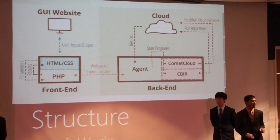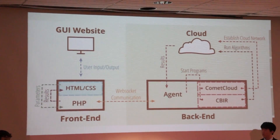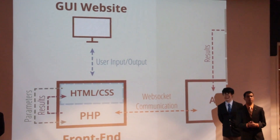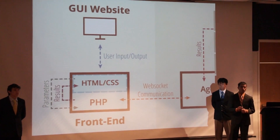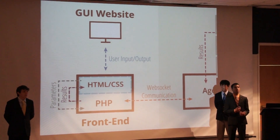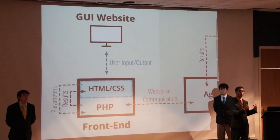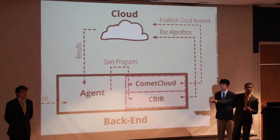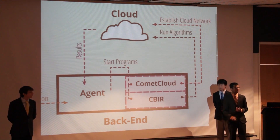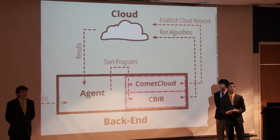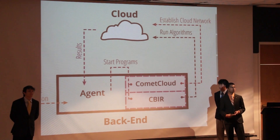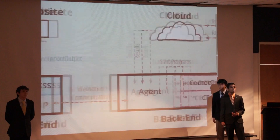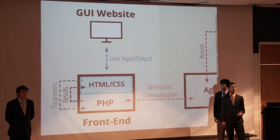Our program is conceptually split into two distinct structures: the front-end and the back-end. The front-end is responsible for handling all of the user interactions, primarily through the website. The back-end is responsible for managing all of the program features. On the front-end, the user first logs onto the website, where they are able to adjust a few parameters and upload their image. Once all of this information has been submitted, it is sent through the PHP scripts running on the web server — PHP is essentially the bridge that connects the front-end to the back-end. The PHP takes the input parameters and sends them over to the agent on the back-end. The agent takes the input parameters and uses them to run the programs: first, it runs the CommonCloud framework to establish the cloud environment; second, it runs the content-based image recognition algorithms within the cloud environment. Once all computations are completed within the cloud, the cloud sends its results back to the agent, which relays it back to the PHP front-end, which outputs it to the HTML and CSS to be displayed on the GUI website.